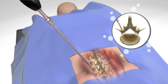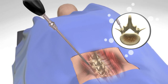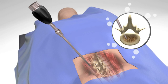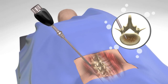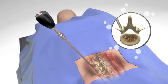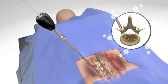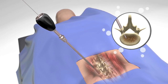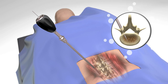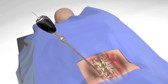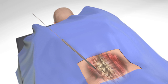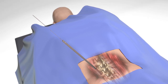Continue to advance the cannulated awl under fluoro. Keeping the cannulated awl in place, remove the inner stylet and advance the guide wire. Remove the handle, leaving the awl shaft in place to act as the first dilator.